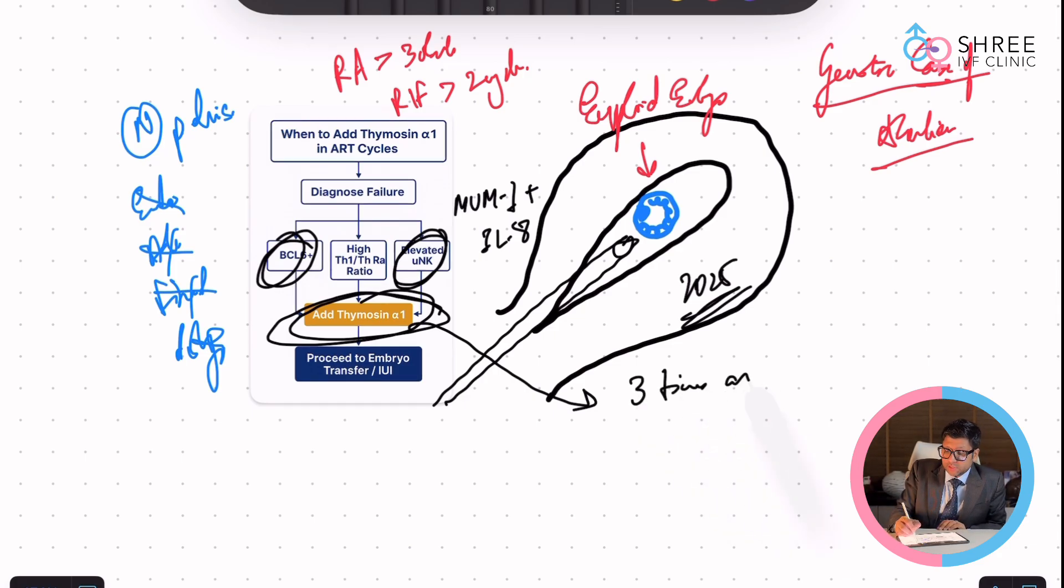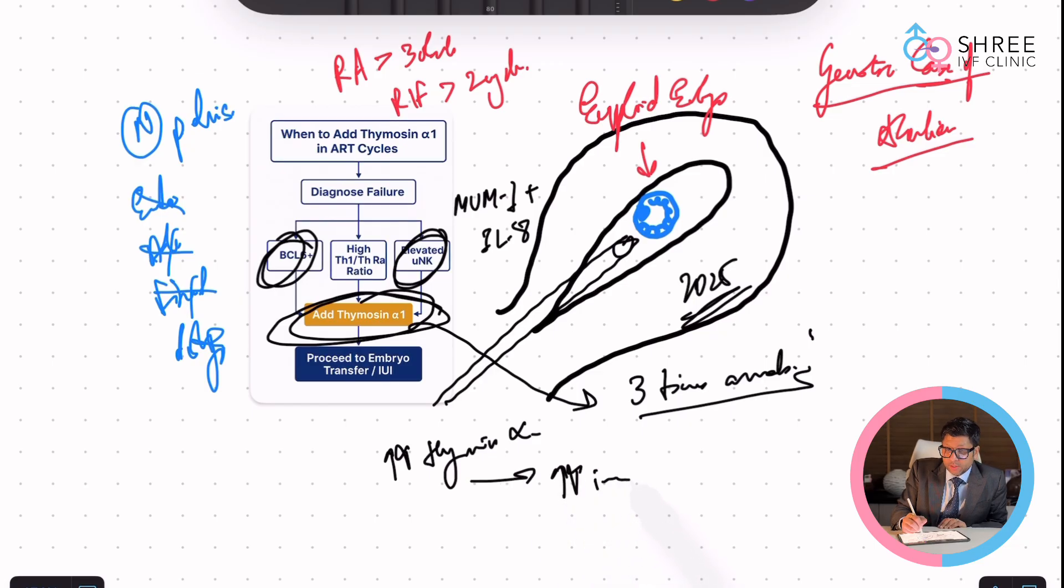Now, this Thymosin three times a week is going to of course go and increase the value of Thymosin alpha in the body which is going to broadly increase the immunity in the body, and this broad increase in immunity in a normal pelvis is believed to go and help and make sure that this embryo has a successful implantation and a successful growth.